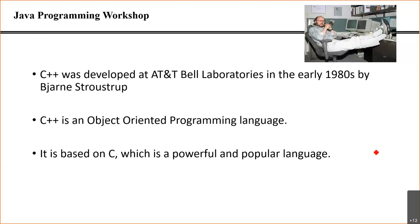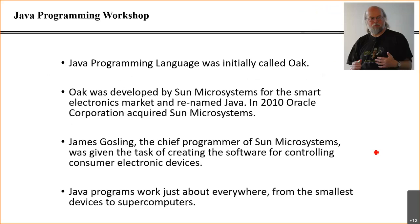If you programmed on an IBM PC, it could only work on IBM PC — it couldn't work on an Apple computer or a mobile device. Furthermore, if you compiled a C++ program on a Linux operating system, the executable would work only on Linux, not on Windows. That is why they wanted a new programming language that is truly platform-independent and can work on any kind of machine — that is why they modified C++ and created the Java programming language.